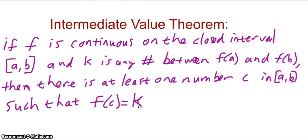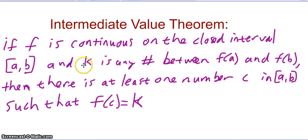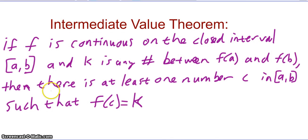Let's talk about what this means, because that's very formal. F is our function, continuous between two x values a and b. For instance, if a is negative 4 and b is negative 3, then f of a is approximately negative 76 and f of b is approximately 5.58. Then there is at least one number c in the interval such that f of c equals k. If I want k to be zero, I know it has to exist at some c value — but I don't necessarily know that c value. I just know that it has to exist. That's what the Intermediate Value Theorem is telling us.